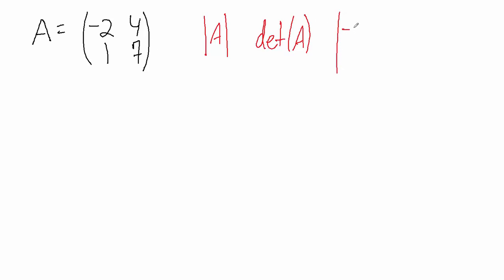Another way is to use this absolute value-like notation here but with the actual matrix itself, so -2, 4, 1, and 7 again. Or we could use this det notation but with the actual matrix itself, so we could say something like det -2, 4, 1, 7 like so.